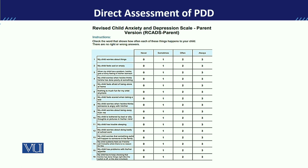If we look at the Child Anxiety and Depression scale, we will ask the parents to respond to the questions. Items include: 'My child worries about things' — you rate it accordingly. 'My child feels sad and empty' — you rate that as well. 'My child has trouble sleeping' — you rate that too.